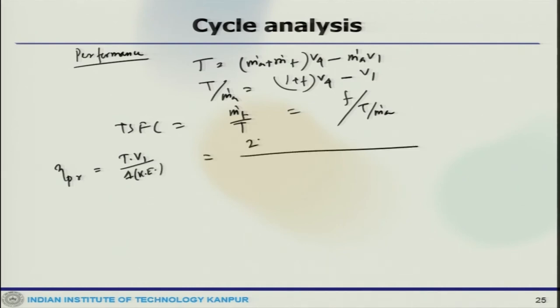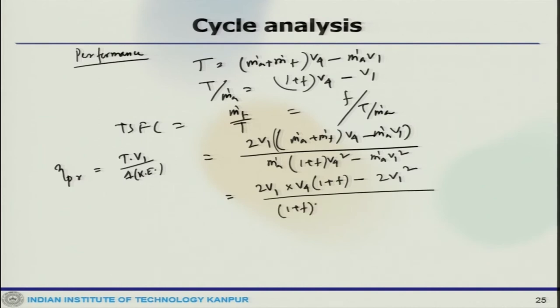And then propulsive efficiency, which is T into V1 by delta kinetic energy. That means it could be written as 2V1 divided by M_dot_A plus M_dot_F times V4 minus M_dot_A times V1, times M_dot_A times 1 plus F times V4 minus V1 square. This can be written as 2 V1 into V4 times 1 plus F minus 2 V1 square divided by 1 plus F times V4 square minus V1 square. If F is small, then eta_PR, this propulsive efficiency, is 2 V1 by V1 plus V4.